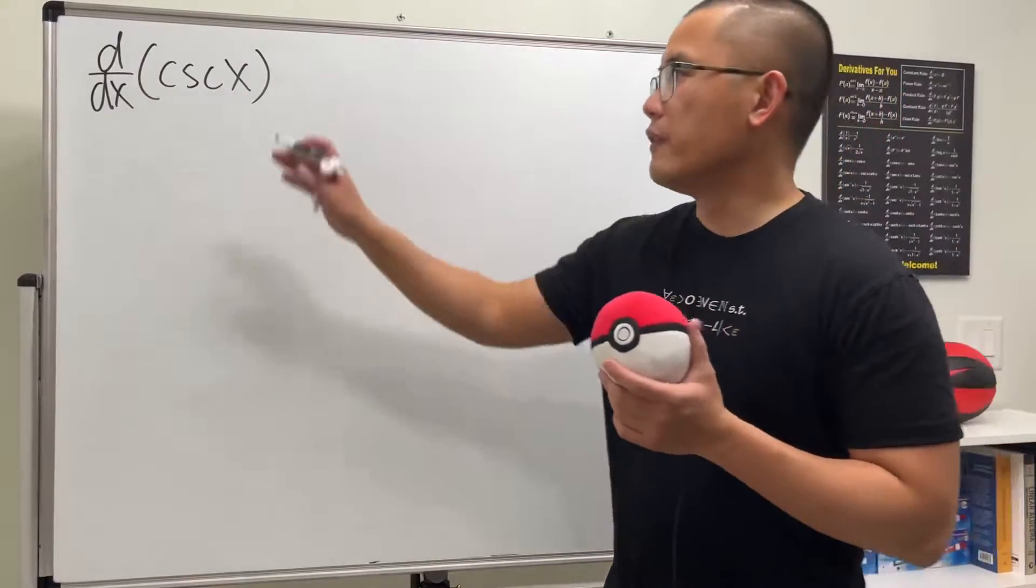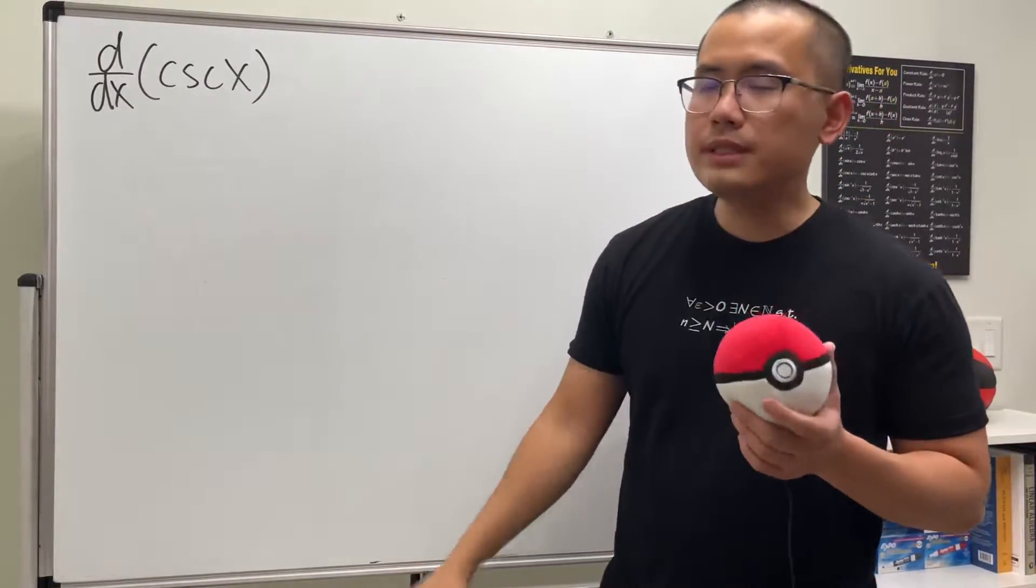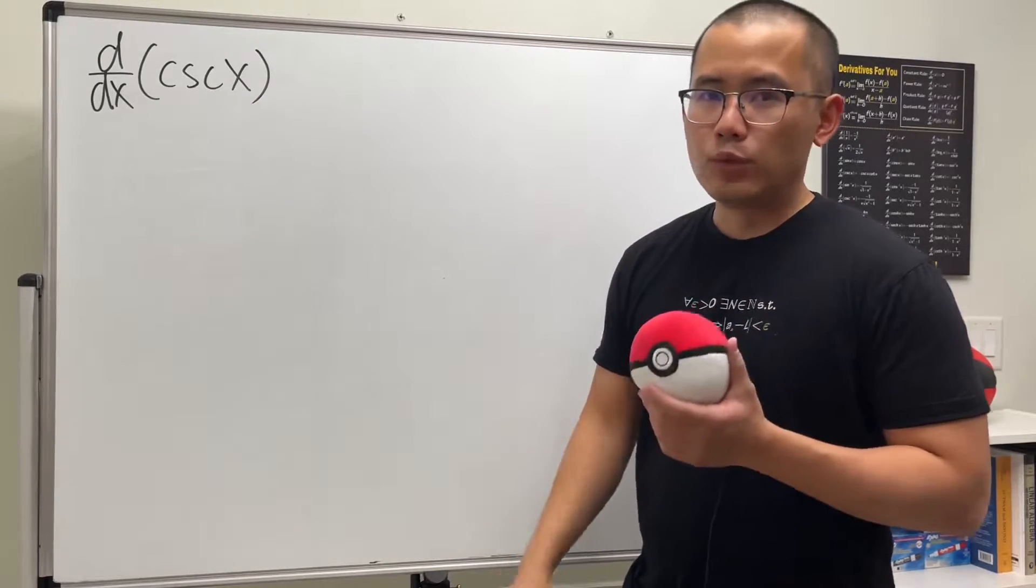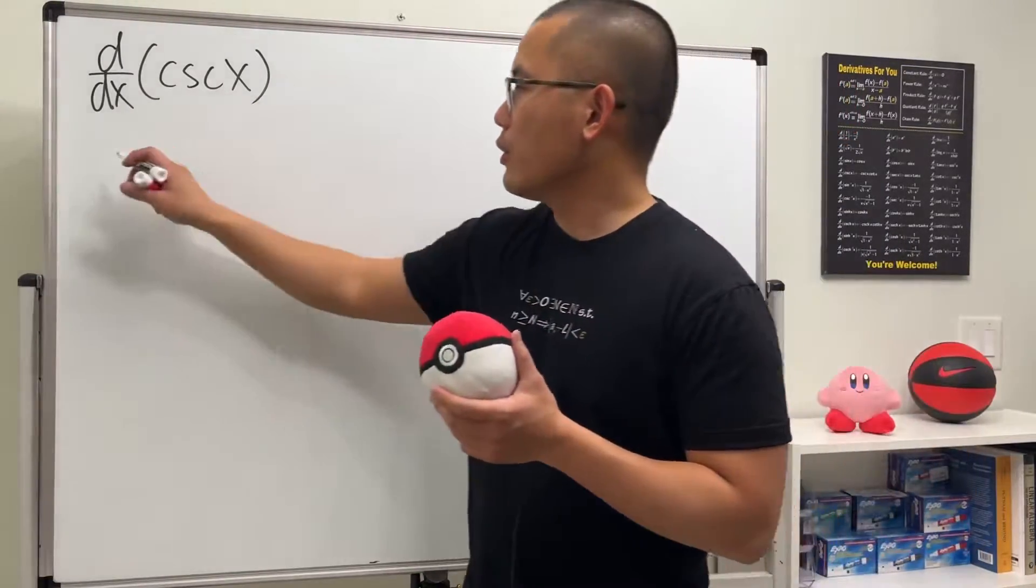Alright, let's figure out the derivative of cosecant x. To do this, we can first write this as 1 over sine x because we know the derivative of sine x already, so let's go ahead and have a look.